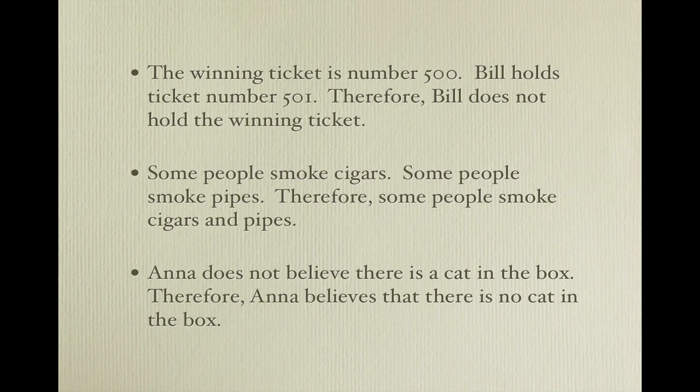Another way you can think about it is this. It is probably reasonable to say that you do not believe that I am six feet tall. This is because I have never talked about my height, so you have no reason to believe that I am six feet tall. It is not that you believe I am not six feet tall — it's that you have no belief one way or the other. So back to our third exercise: Anna does not believe there is a cat in the box. We might naturally think that this means Anna believes there is no cat in the box, but this interpretation is not the only possibility. It could be that Anna simply does not have a belief one way or the other. Perhaps she has never even thought about it. Looking at it this way, it would be possible for Anna not to believe there is a cat in the box, and also for Anna not to believe that there is no cat in the box. Therefore, the argument is invalid.